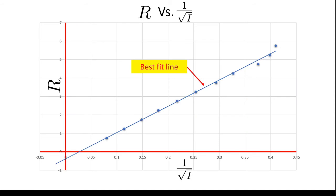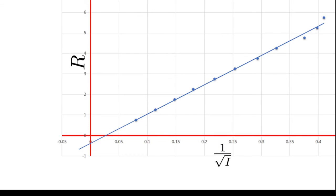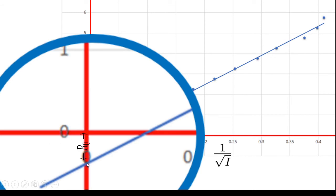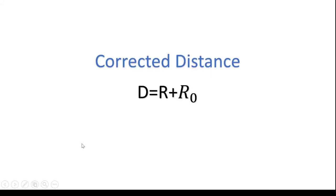So to find a correction, what we do is we basically plot a graph of the R value versus 1 divided by square root of intensity. If you look carefully and you plot a best fitting line here, you will see that the line intersects in the negative y direction and this distance from the origin to the point where the intersection happens is going to be called as R naught. Hence, we have to correct the distance and find the true distance D as R plus R naught.